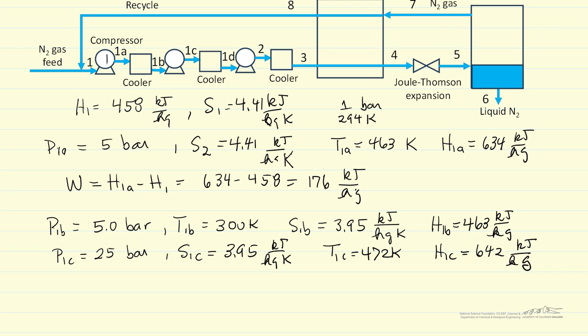So the same process: after the first compressor, we cooled back to 300 Kelvin at 5 bar. We use the spreadsheet to get the entropy, and then we use the spreadsheet at 25 bar and find what's the temperature where the entropy is the same value, 3.95. Therefore, we can get the enthalpy leaving the second compressor, and therefore the work for that second compressor. The work 2 is just the outlet, H₁C minus H₁B.